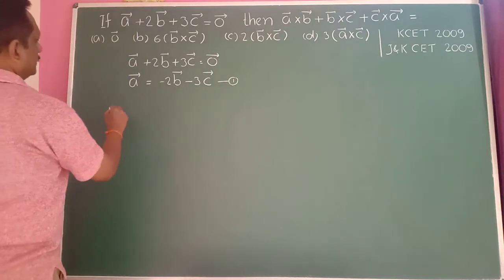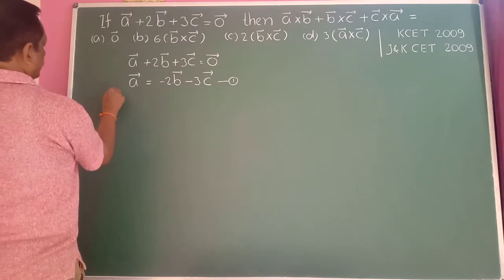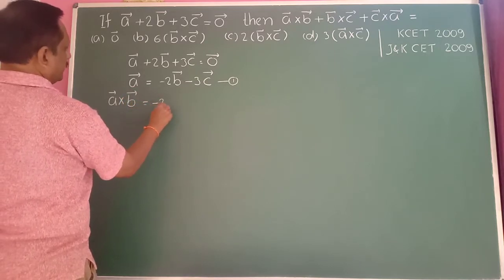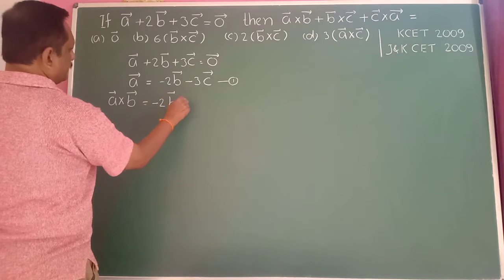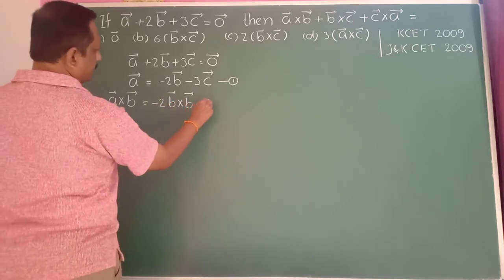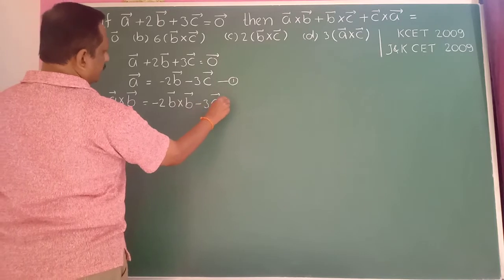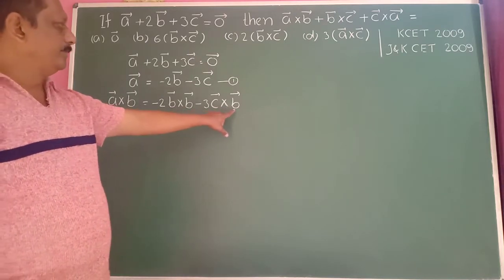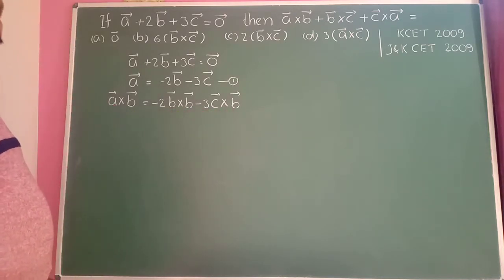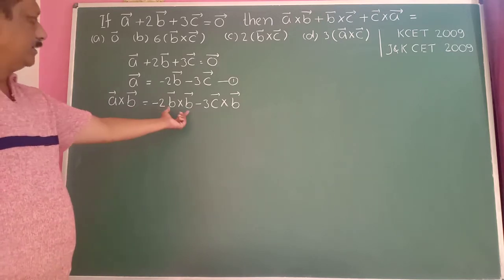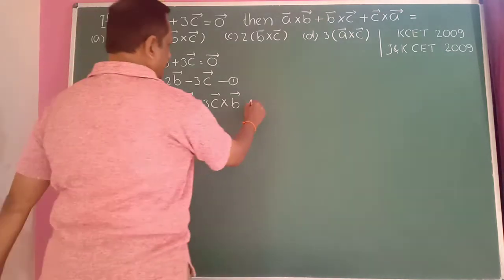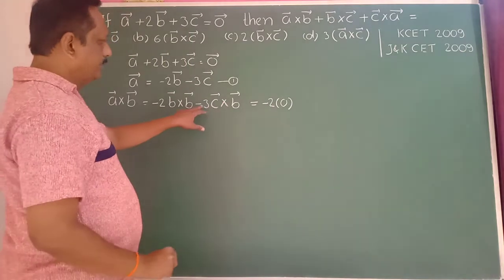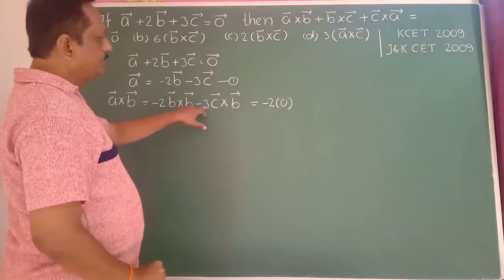Therefore a-bar cross b-bar equals minus 2 into b-bar cross b-bar minus 3 into c-bar cross b-bar. Since b-bar cross b-bar equals zero, we get a-bar cross b-bar equals minus 3 into c-bar cross b-bar.